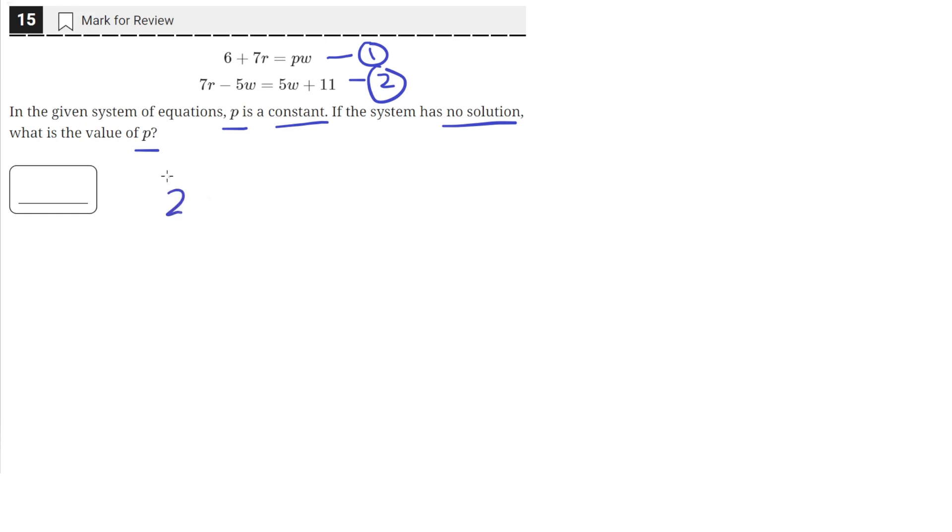So first let's take equation two and isolate for the value of r. We can do that by adding 5w to both sides. So we'll get 7r is equal to 10w plus 11.